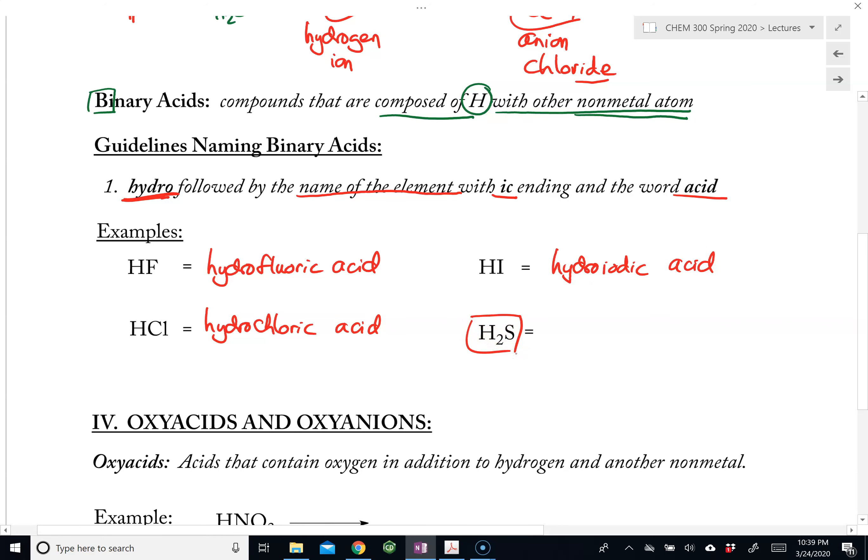And here is an exception. All of the binary acids that we have seen, there is one other substance, H2S. In this case, this is not binary. But because this substance also behaves as an acid, meaning if we were to take it and dissolve in water, it will produce the hydrogen ion. Therefore, we also include this in the naming of binary acids as well. So in this case, this is hydrosulfuric acid.